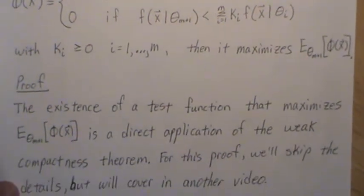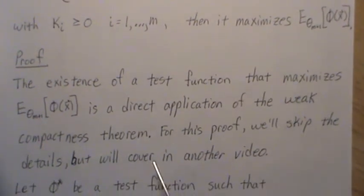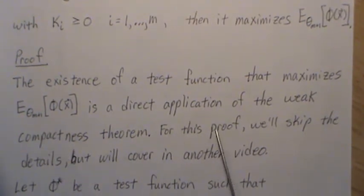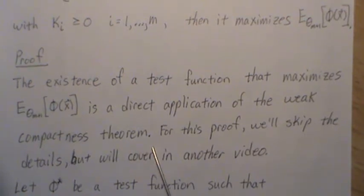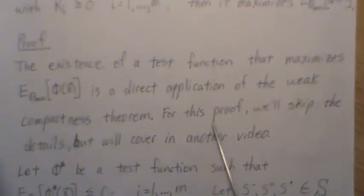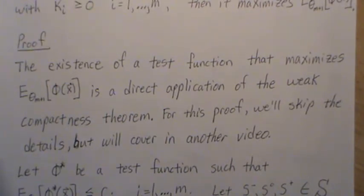The proof goes like this. First, we have to prove that a test exists. I'm kind of cheating here, but the existence of a test that maximizes this expected value is a direct application of the weak compactness theorem — basically you state it and there's the proof. I'm going to point you to the weak compactness theorem, but we're going to skip the details and cover it in great detail in another video. It does show that a test exists that maximizes that expected value.